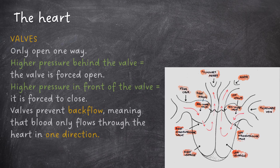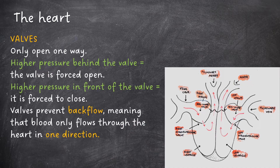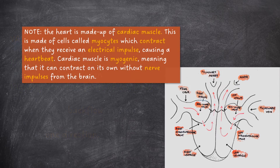Valves only open one way. Whenever there is higher pressure behind the valve, the valve opens. If the pressure is higher in front of the valve, it is forced to close. Valves prevent backflow, meaning that blood only flows through the heart in one direction.